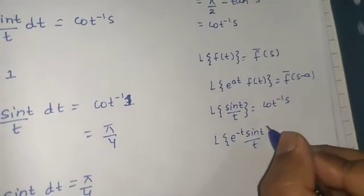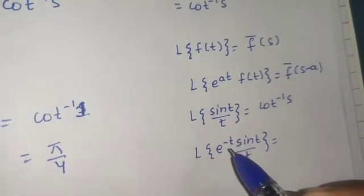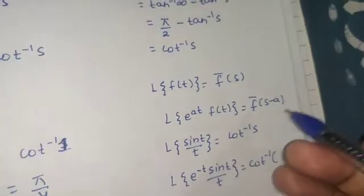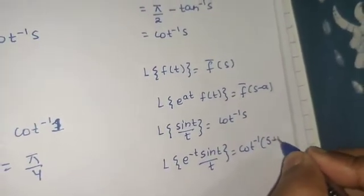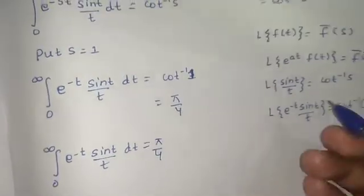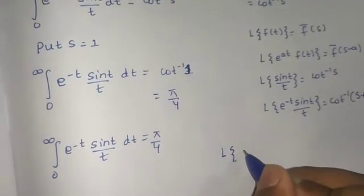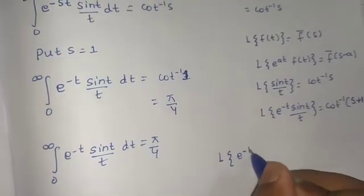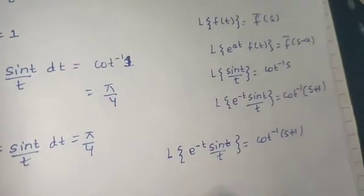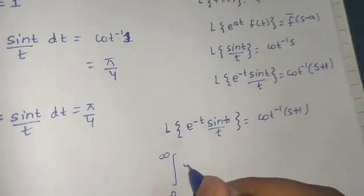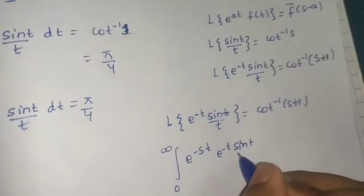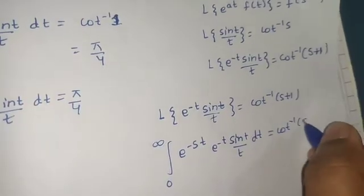So Laplace of e^(-t) sin(t)/t — look carefully, here a = −1 — so we replace s by s − a, and since a = −1 that gives s − (−1) = s + 1. Therefore Laplace of e^(-t) sin(t)/t equals cot⁻¹(s + 1). Using the definition, we write this as the integral from 0 to infinity of e^(-st) times e^(-t) sin(t)/t dt, which equals cot⁻¹(s + 1).